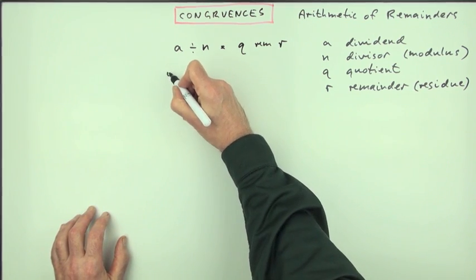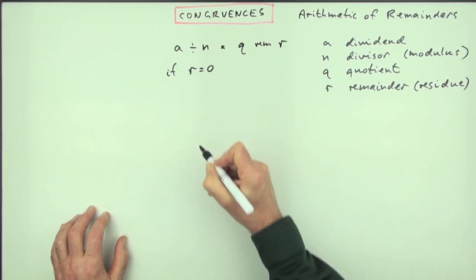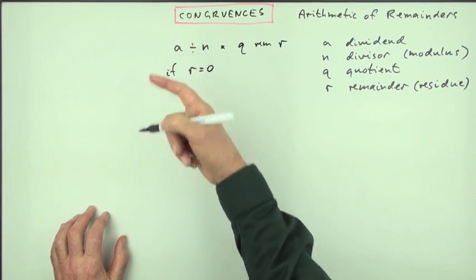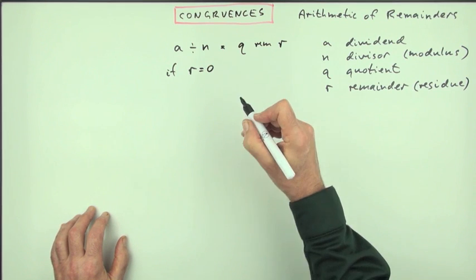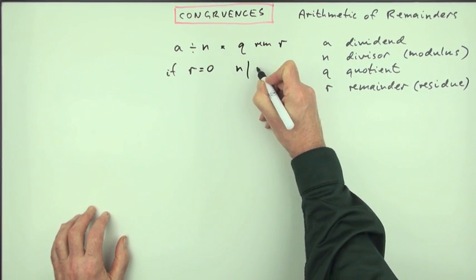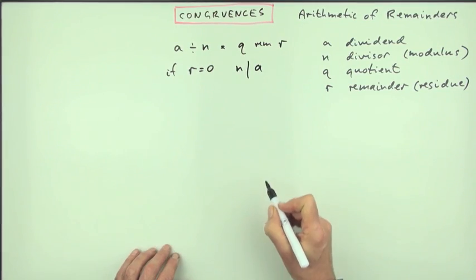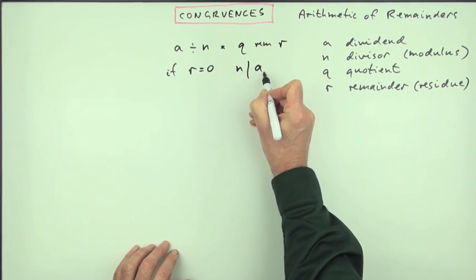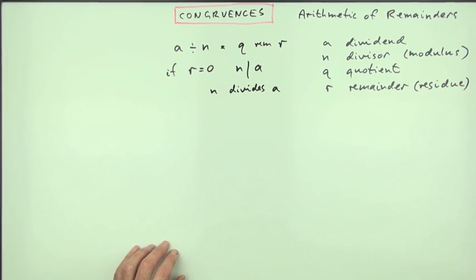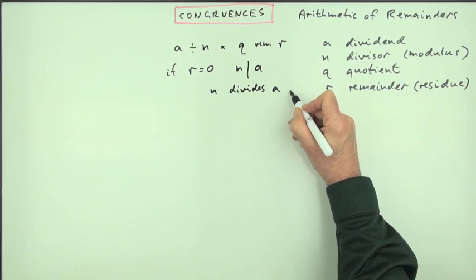Another piece of notation: if the remainder is 0, that means N divides A exactly. And the notation for that is N with a vertical stroke then A means N divides A. Implication being, of course, that's exactly.